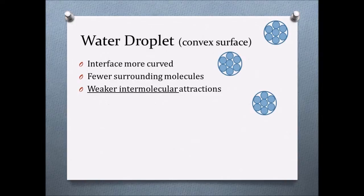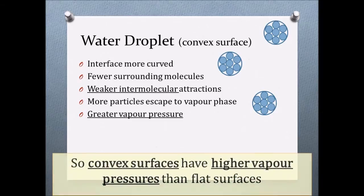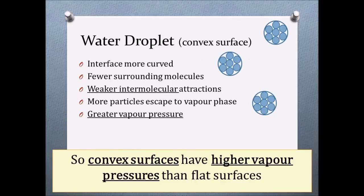With weaker attractions, the molecules require less energy to escape into the vapor phase, and so it happens more often. This can be measured as the vapor pressure being higher. So convex surfaces have higher vapor pressure compared to flat surfaces.